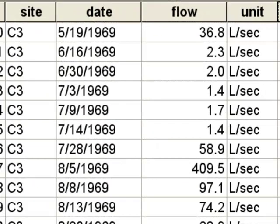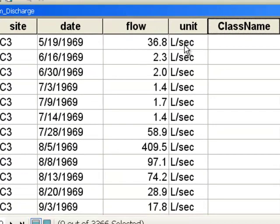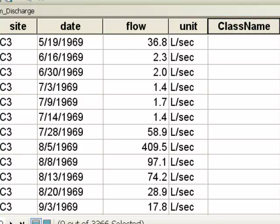Here's another example. We have a watershed basin — the C3 basin — and for various dates we have the stream discharge flow at the outlet of the watershed basin in liters per second. What we might want to do is come up with a class of flow ranging from very low flow if it's less than 10 liters per second to extreme flow if it's above 300 liters per second.